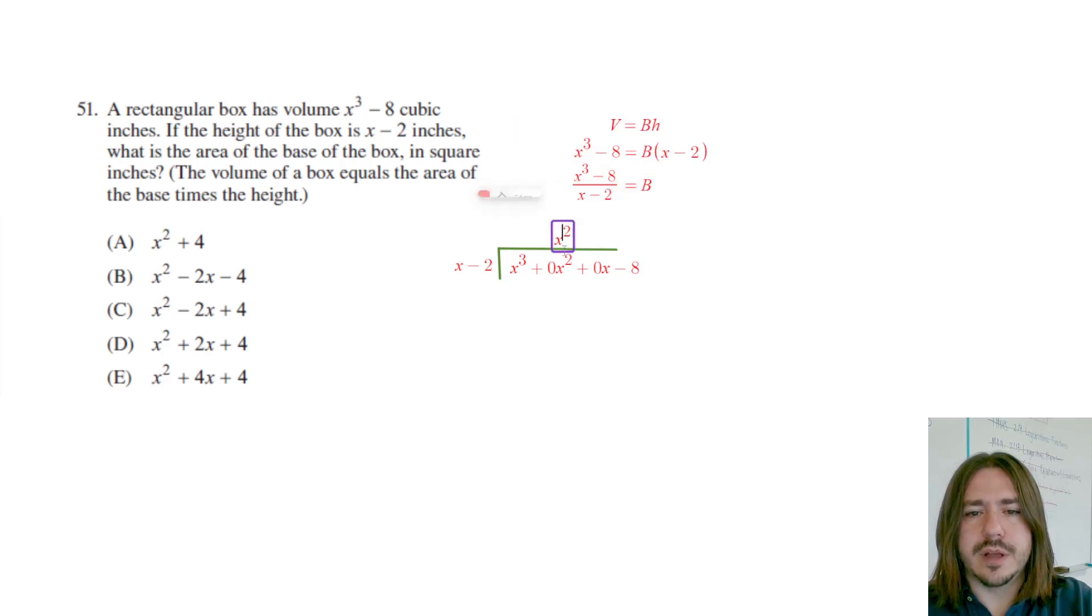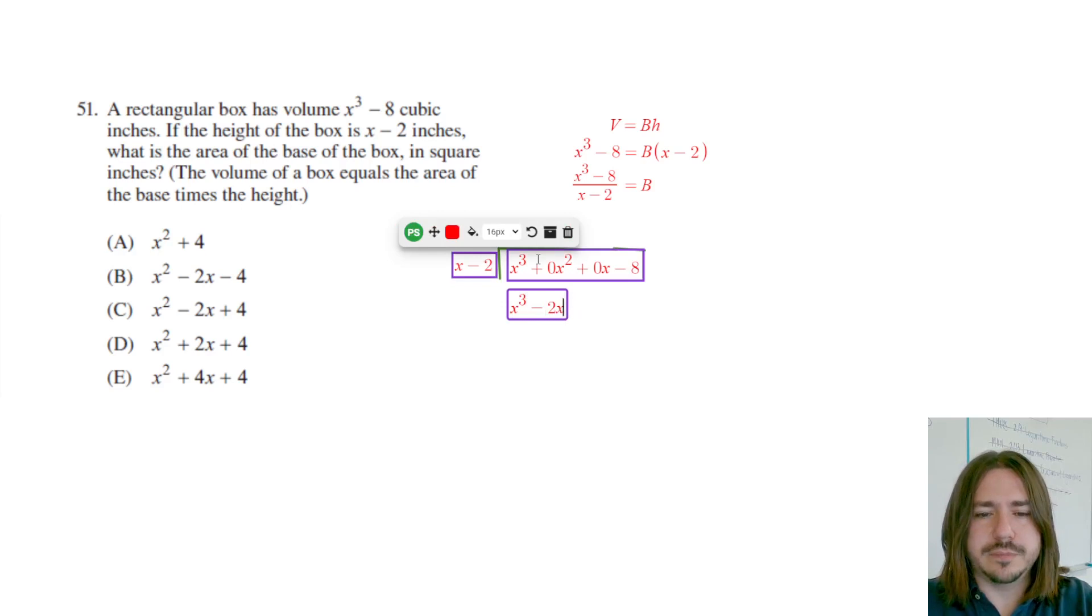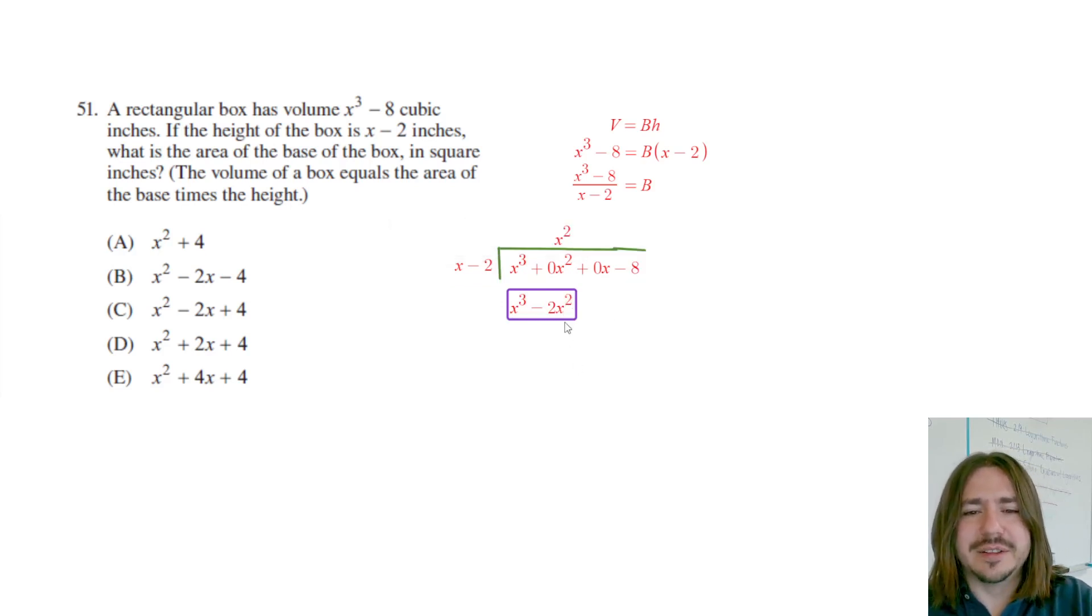Now I'm going to multiply just like how you would do long division in elementary school. It's really the same algorithm, we're just applying it to polynomials. You're going to multiply this x squared by whatever you see here and write that product down here. So x squared times x is x cubed. X squared times negative two would be negative two x squared.